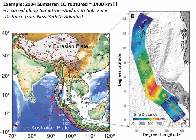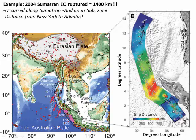An example of this is the 2004 Sumatran earthquake that created a huge tsunami. This earthquake ruptured 1,400 kilometers — the distance from New York to Atlanta. It started at this star off the northern end of Sumatra and ripped all the way up to Thailand. This figure shows the slip on the subduction zone during the earthquake. Red is where the slip was greatest — seven and a half meters of slip here. Wow, that's a lot, tapering off to maybe a meter up towards Thailand. Imagine moving seven and a half meters in an instant — that's a lot of energy.